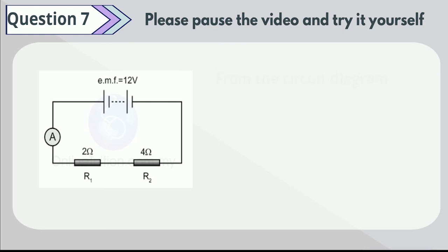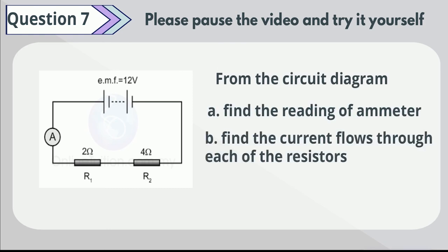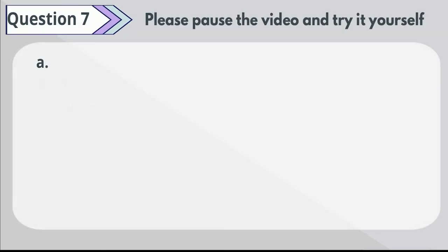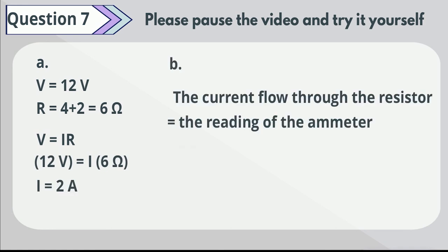Question 7. From the circuit diagram, find the reading of the ammeter and the current flow through each of the resistors. Please pause the video to try it yourself. From the data given, the current is equal to 2 amps. The current flow through each of the resistors is equal to the reading of the ammeter. Thus, the current flow is also 2 amps.